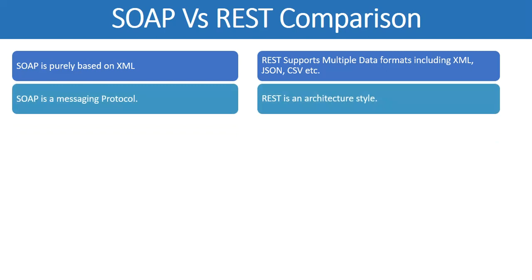The second major difference between SOAP and RESTful web services is that SOAP is basically not a transport layer protocol — rather it's a messaging protocol — while REST is not a protocol at all, but rather an architectural style. REST is an architectural style that defines how we are going to use underlying transport protocols and communicate using the standard HTTP verbs.